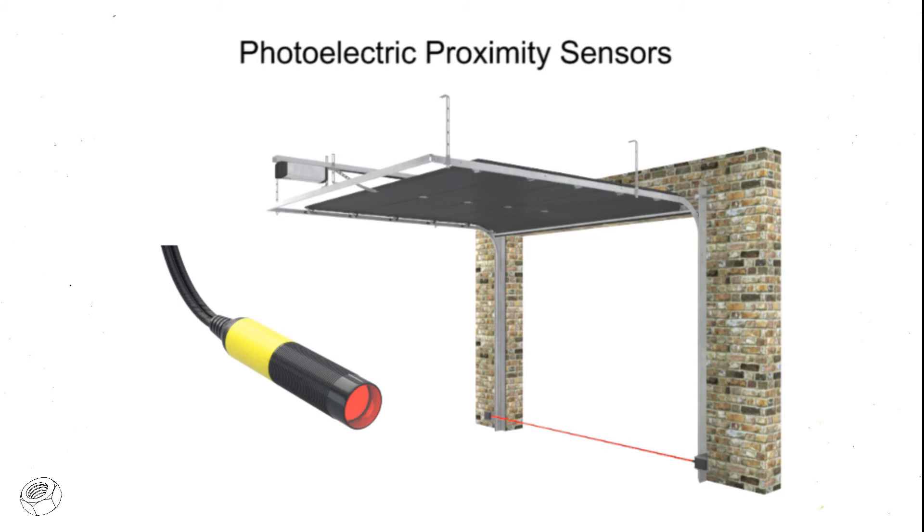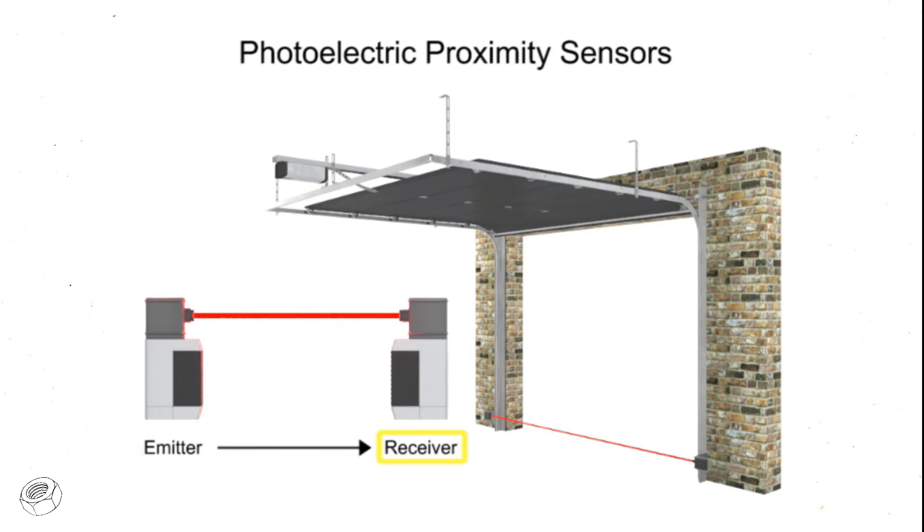Photoelectric sensors have the greatest detection range from 1 millimeter to 25 meters or more. They operate by the use of an emitter, which transmits a beam of light to the receiver. When the light is normally being received, it is known as a dark-operated mode. When the absence of light is required, it is known as light-operated mode.